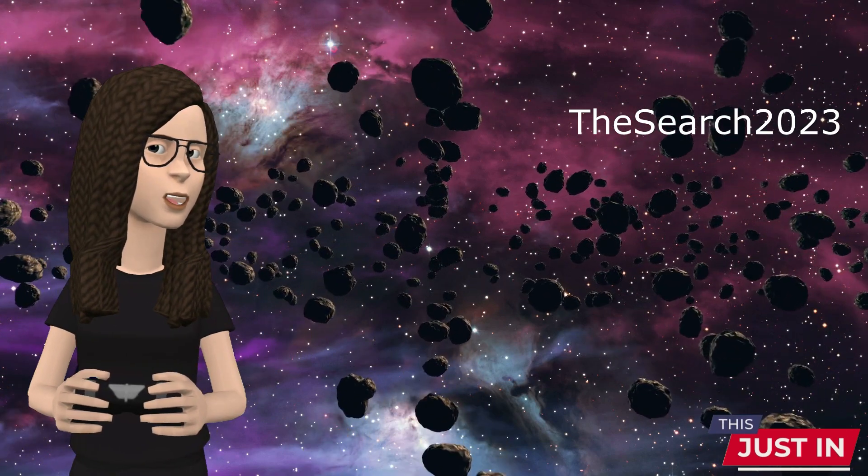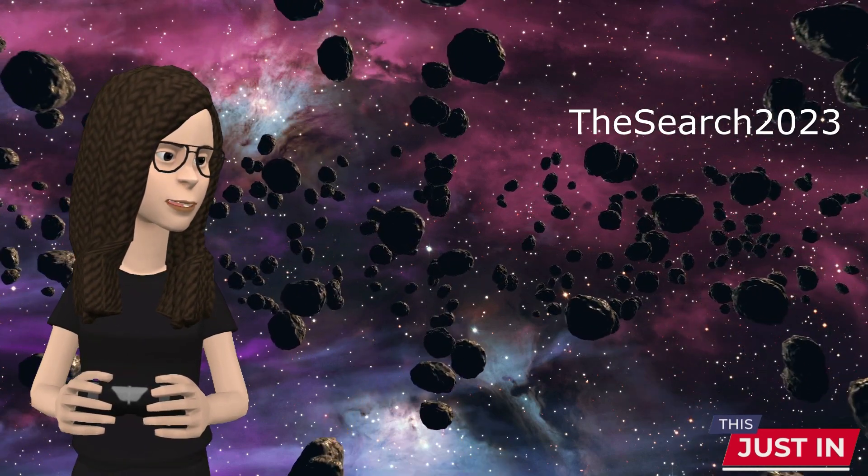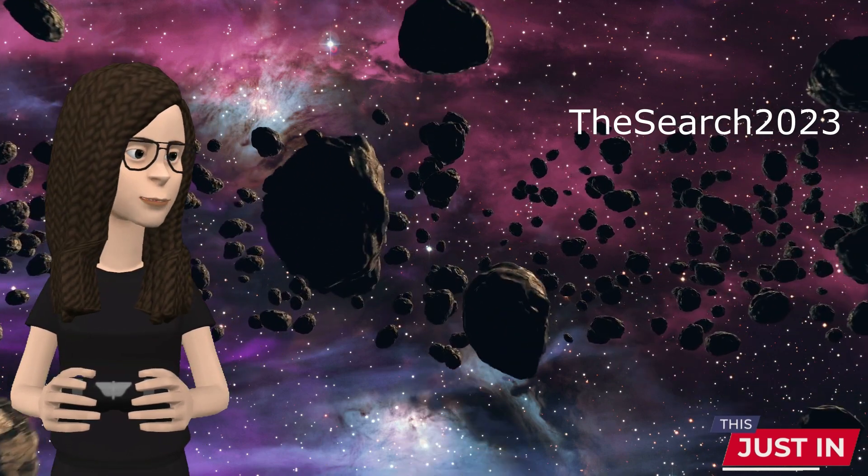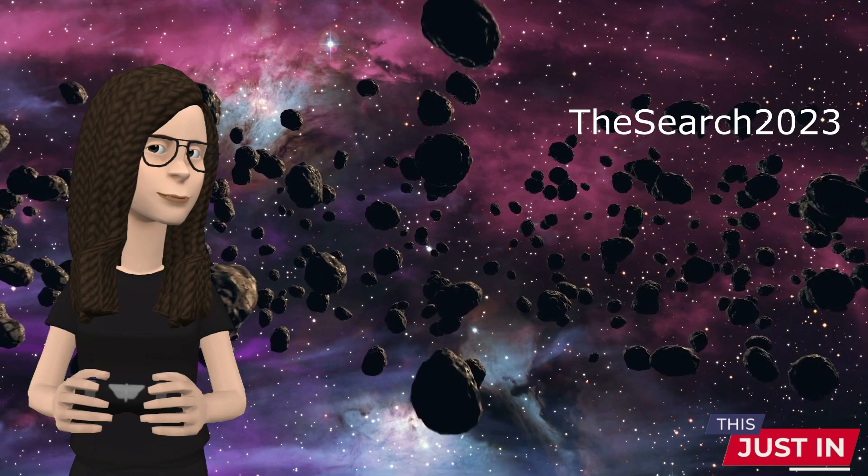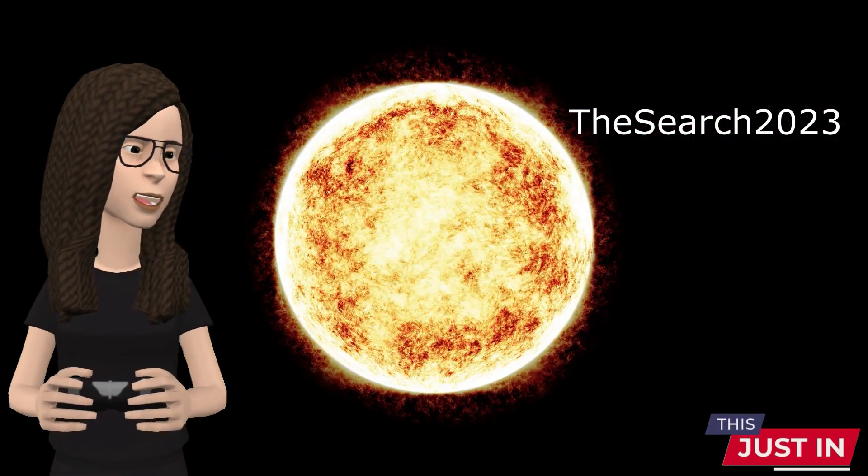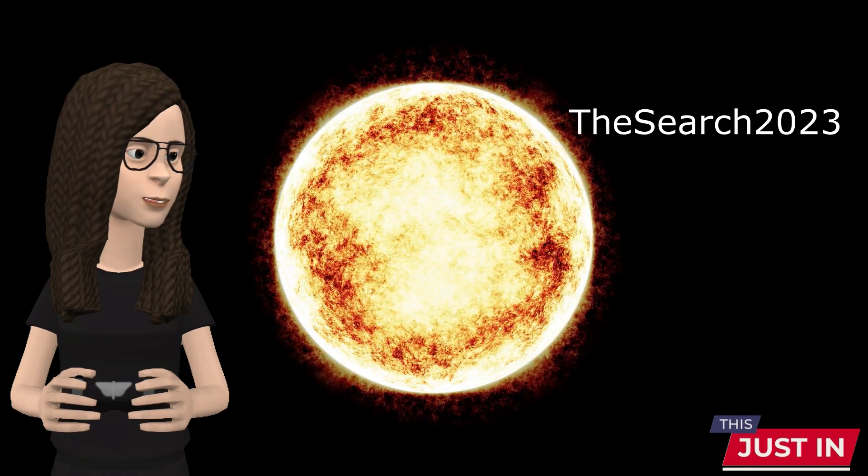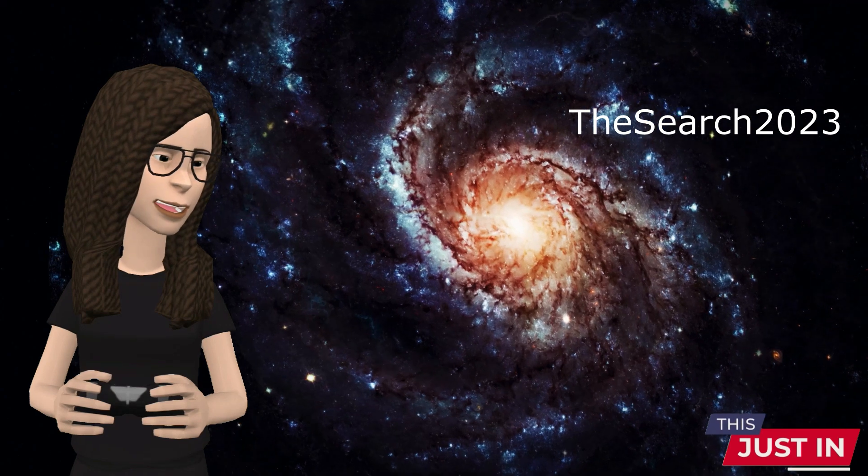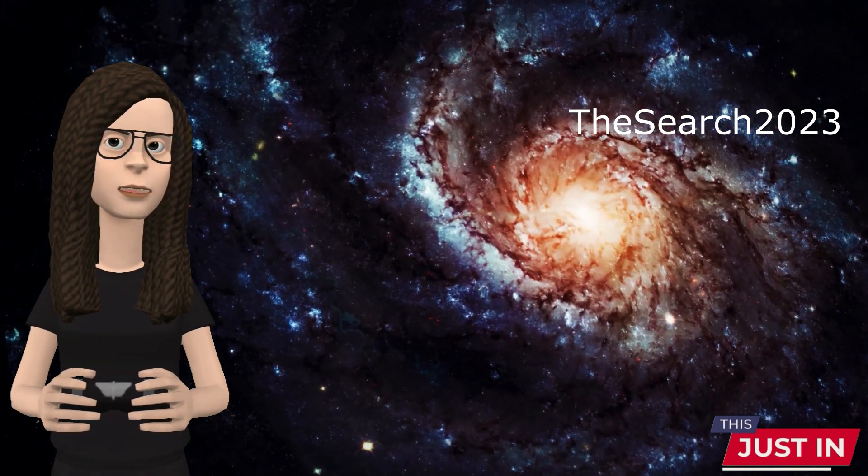The Andromeda galaxy, M31, is approaching us by about 300 kilometers per second measured with respect to the Sun. If you subtract the Sun's orbital motion around our galaxy, about 230 kilometers per second towards Cygnus, M31 is still approaching the Milky Way by about 130 kilometers per second.